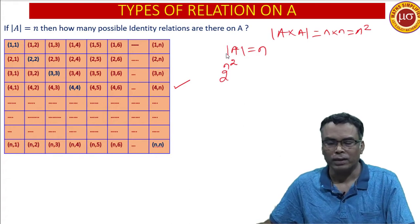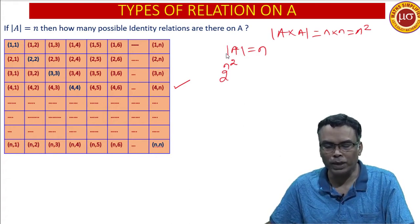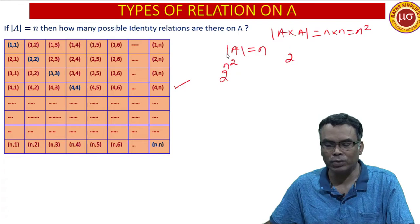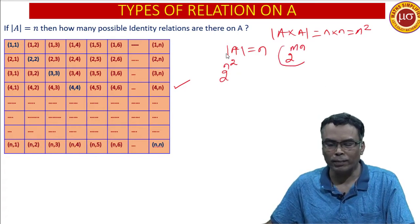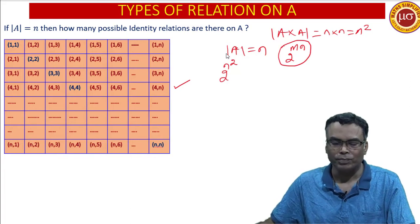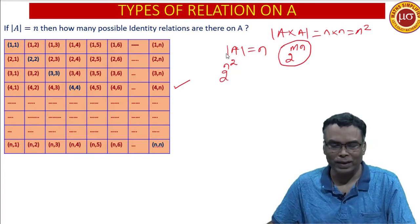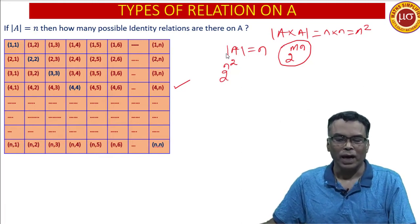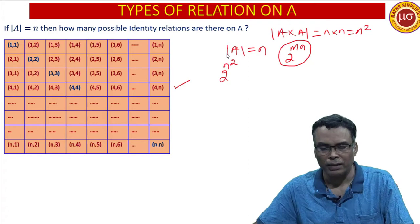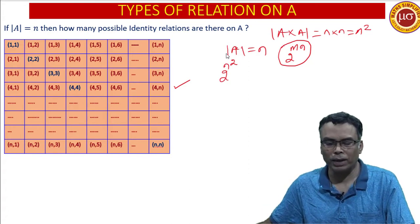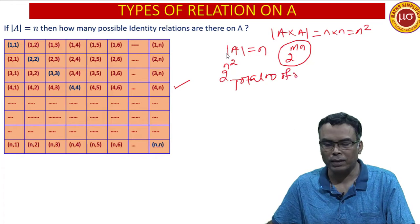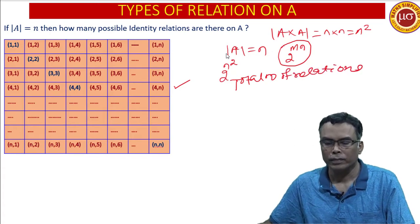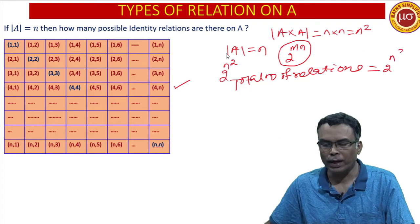How many relations are possible? The number of relations are the number of subsets of A cross A. What is that? It is 2 to the power N square. Because the number of relations from A to B, which we have already read, is 2 to the power MN. This is the total number of relations.